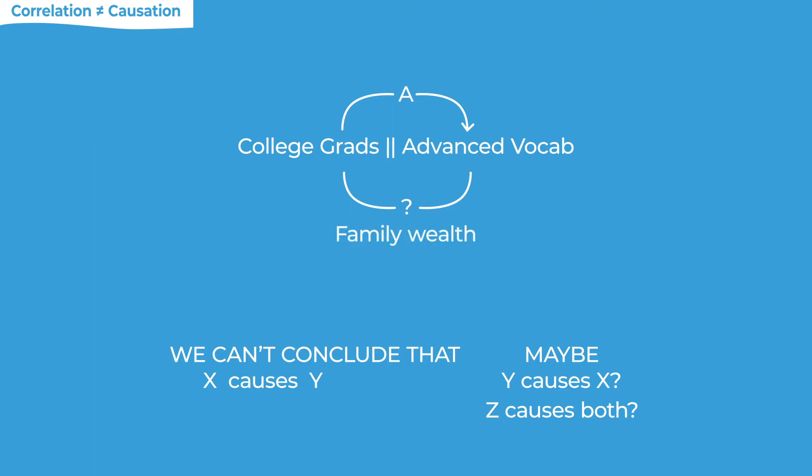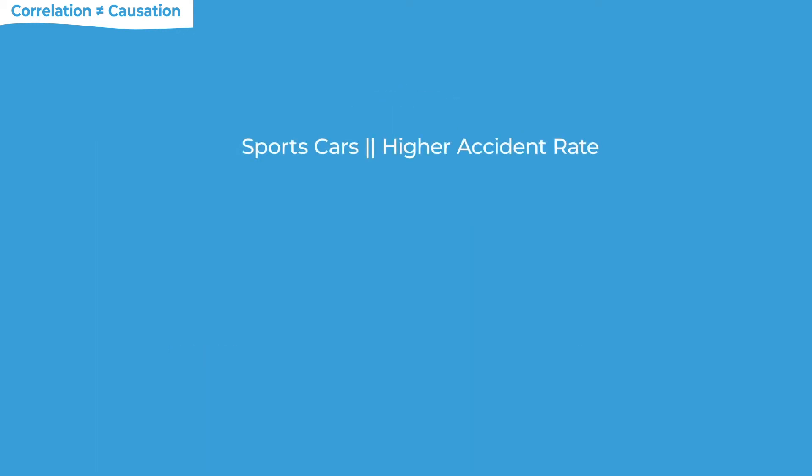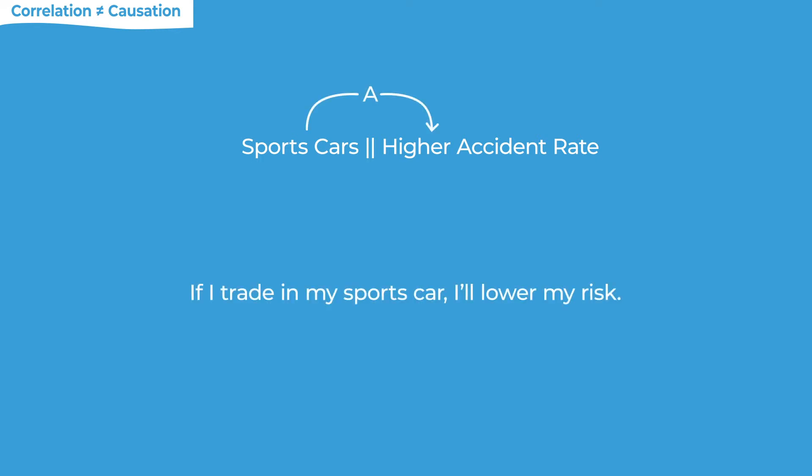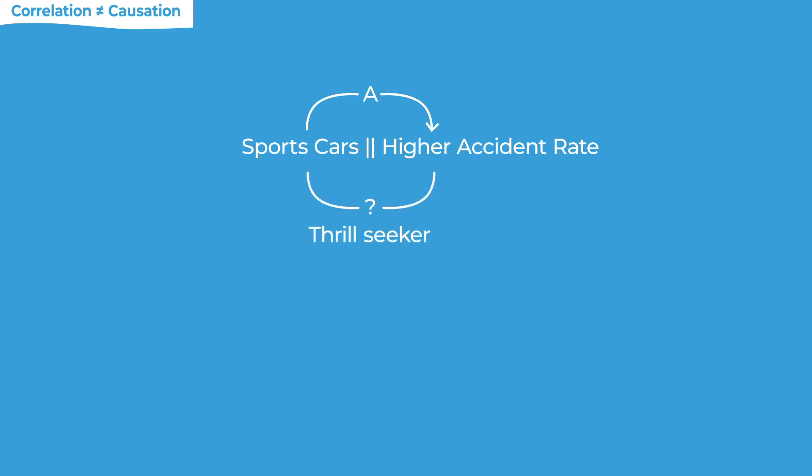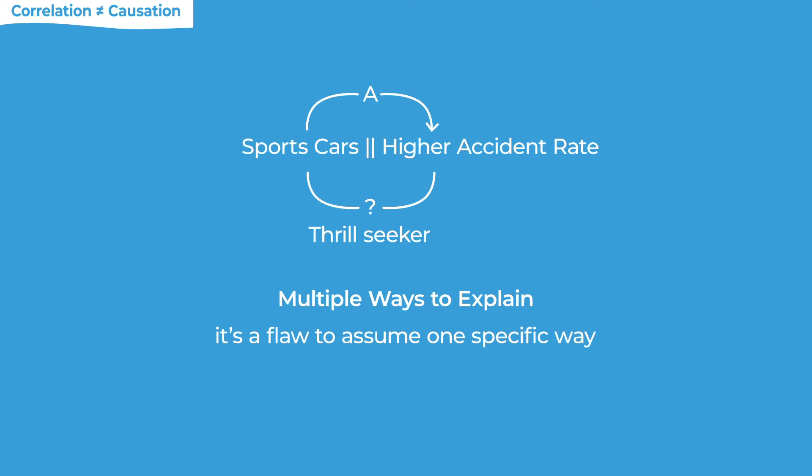The other popular alternative explanation for a correlation is that there's some third factor we haven't identified that is really the causal difference maker. Sometimes it's causing both things; sometimes it causes one and just happens to be associated with the other. For the college vocab example, maybe being wealthy is the third factor — wealthy families are more likely to have advanced vocab and also more likely to get their kids through college. With the sports car argument, reverse causality doesn't quite work, but the third factor does: you're getting into accidents because you're an obnoxious thrill-seeking driver, and that same personality trait is making you buy a sports car. There are multiple ways to explain a correlation, so it's a flaw for an author to just assume one thing causes another.